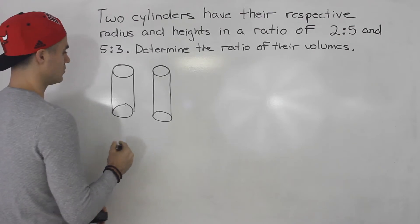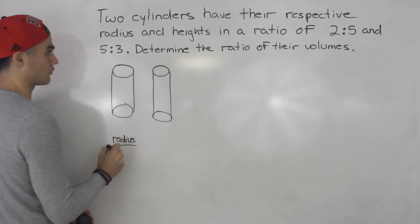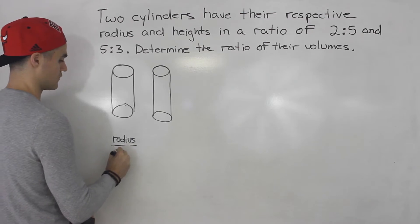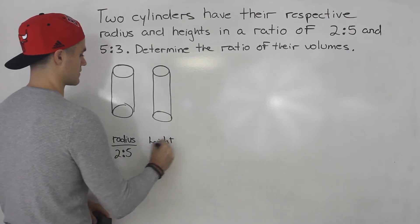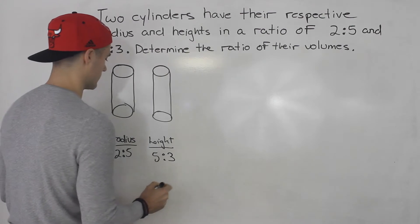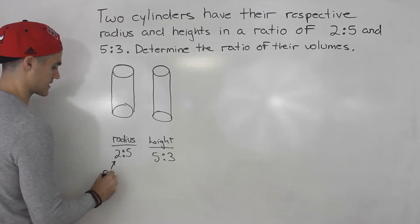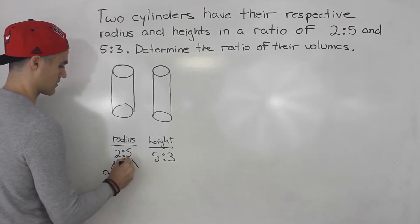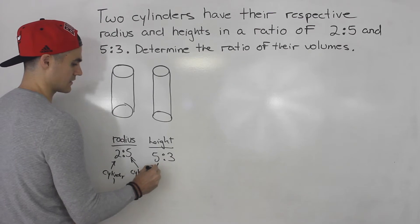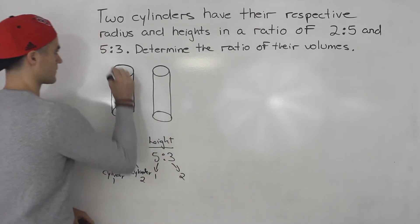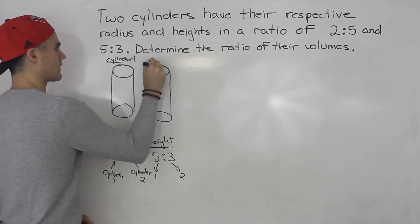So we're told that the ratio of the radiuses, or the radii I think that's the plural form for radius, is 2 to 5 and then the height ratio is 5 to 3. So what that means is that this here represents cylinder 1, this here represents cylinder 2 and same thing here. This is cylinder 1, this is cylinder 2, and let's call this up here cylinder 1 and then we got cylinder 2.